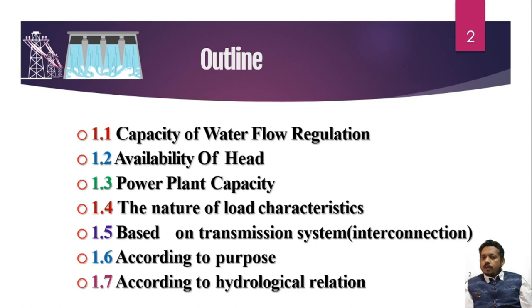The first aspect is capacity of water flow regulation, or the quantity of water available. Second is availability of head. Third is power plant capacity. Fourth is the nature of load characteristic. Fifth is based on transmission system interconnection. Sixth is according to purpose. Seventh is according to hydrological relation. These are the seven points by which we classify different types of hydroelectric power plants.